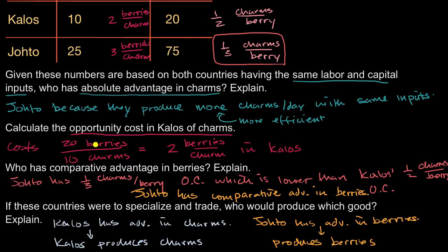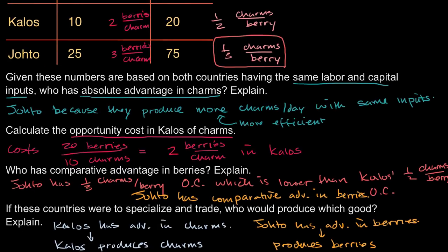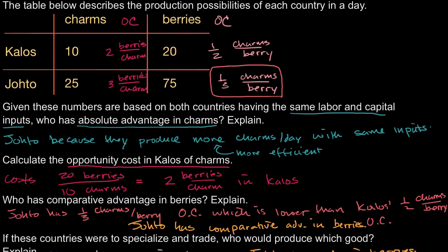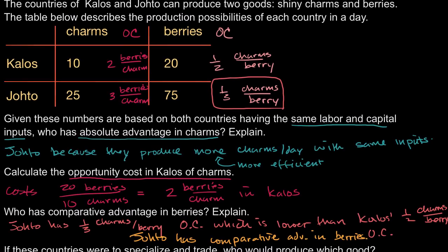This goes back to something touched on at the beginning. Even though Johto has the absolute advantage — in fact, they have the absolute advantage in both goods — and even though Johto can produce charms far more efficiently than Kalos, under the logic of comparative advantage, Johto should actually produce the berries, while Kalos should produce the charms, because Kalos has a lower opportunity cost for charms.